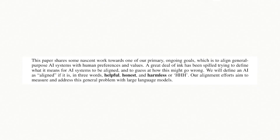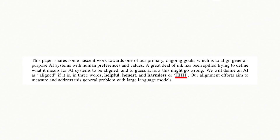Anthropic says that an AI is aligned if it is helpful, honest, and harmless — or HHH for short. Keep in mind this HHH acronym for helpful, honest, and harmless, because you'll be hearing it a lot throughout this video series.